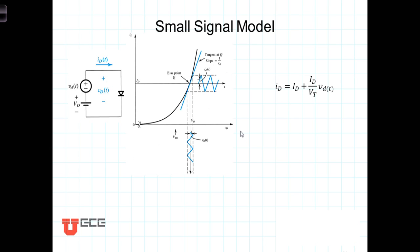In the previous video, we derived this expression for the total diode current resulting from a small time-varying voltage superimposed on the bias voltage. This is a very convenient form to work with.